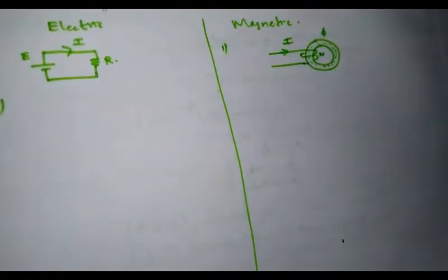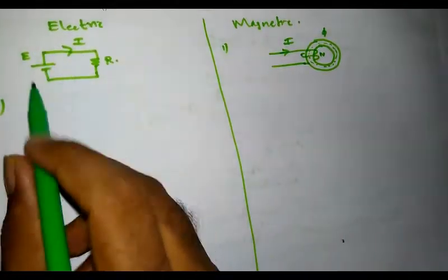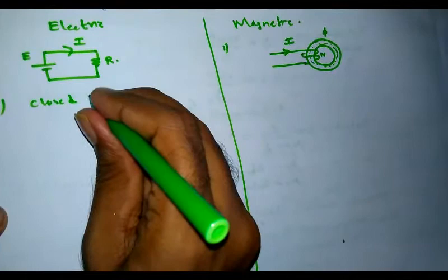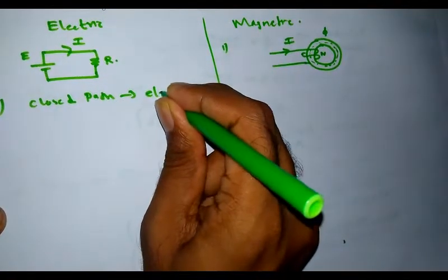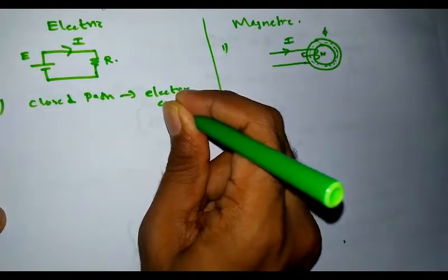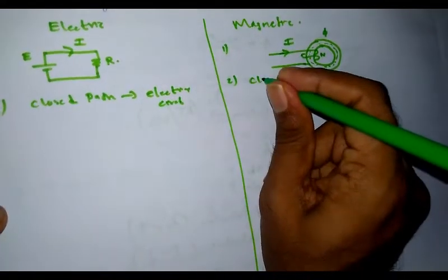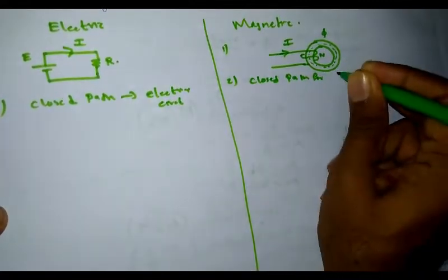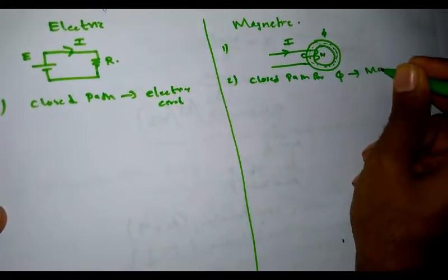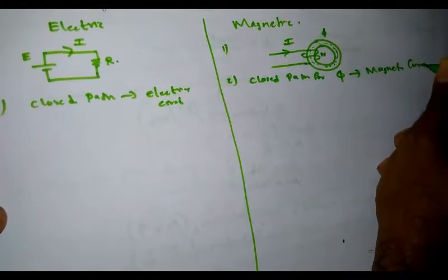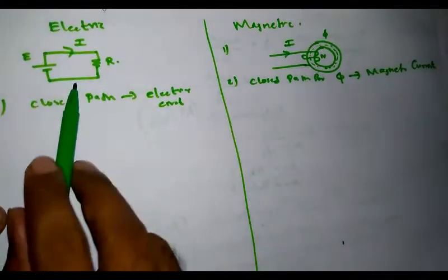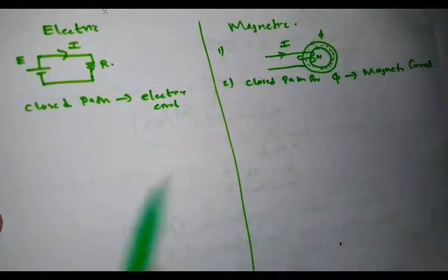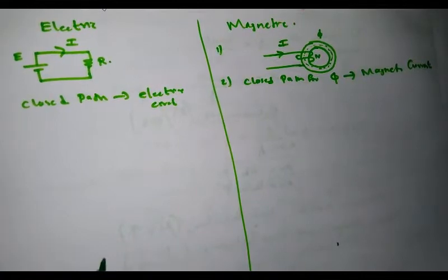Second, this closed path for electric current is known as an electric circuit, whereas this closed path for magnetic flux is known as a magnetic circuit.